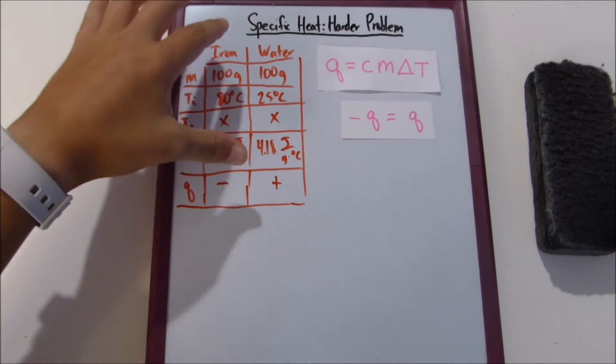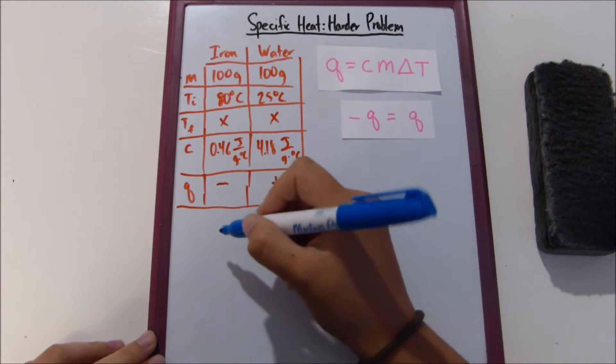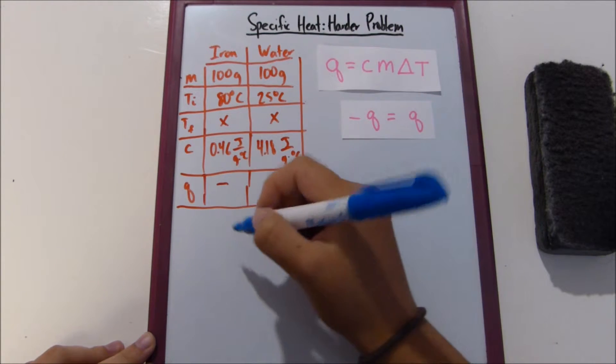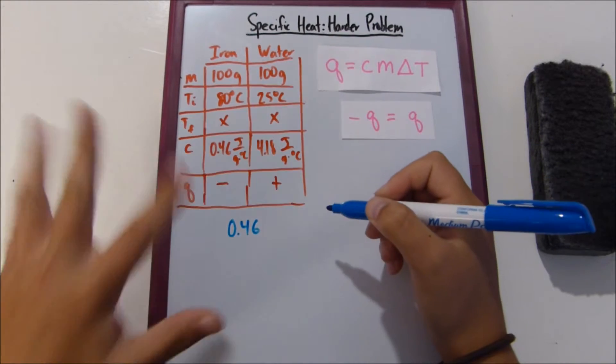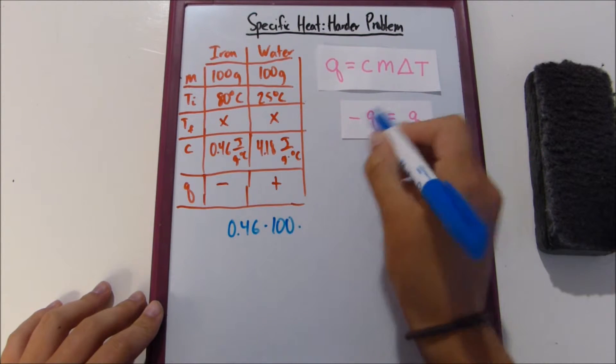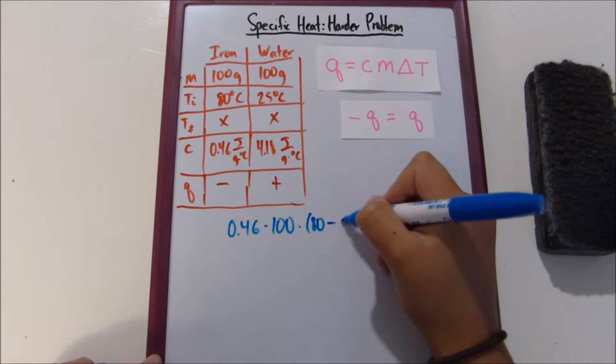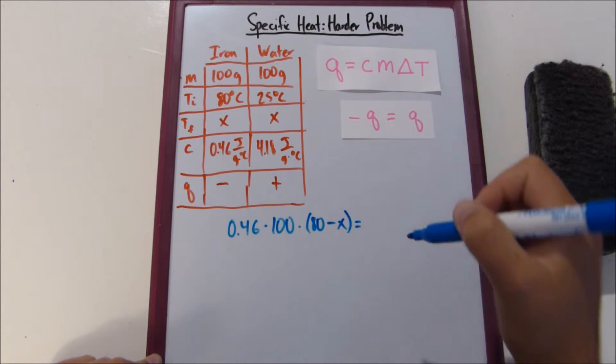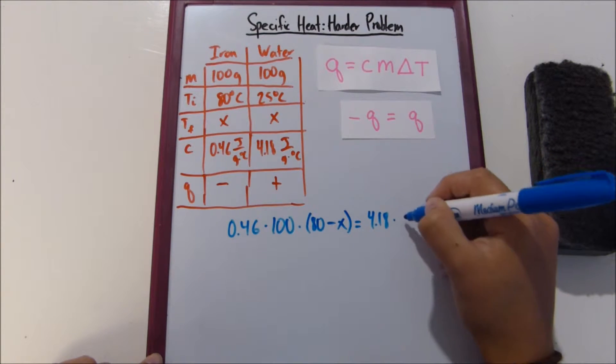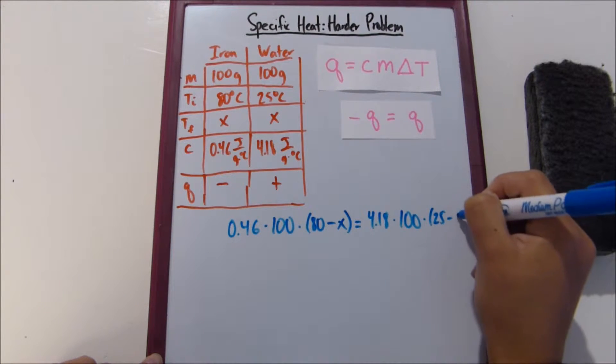So first I'm going to set it all positive, and then I'm just going to make it all negative. If that made sense, let's just do it. So if we start off with our C, 0.46, I'm just going to drop the unit so it doesn't get too messy, times our mass, 100, times our change in temperature, which is 80 minus X, equals the specific heat of water, 4.18, times our mass, 100, times our change in temperature, which is 25 minus X.